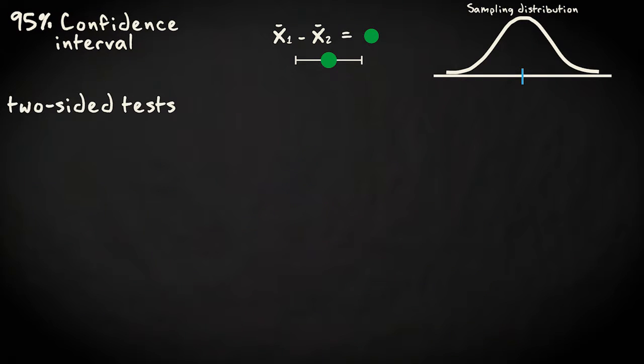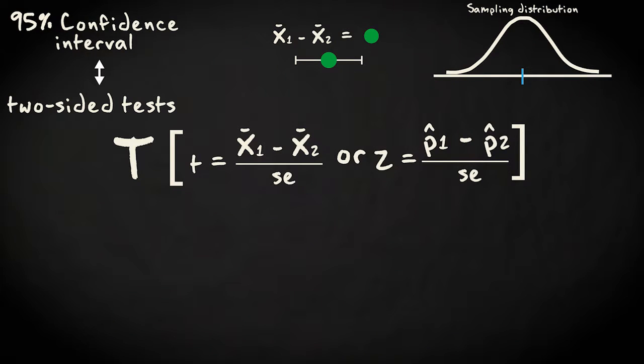Two-sided tests and confidence intervals are closely related. We'll look at how a confidence interval is constructed, and then note the parallels with two-sided tests. I'll use a capital T to denote test statistic values in general. Depending on whether we're considering means or proportions, this could be a T value or a Z value.